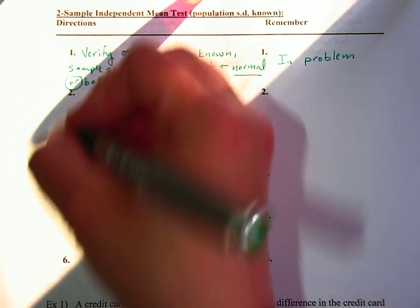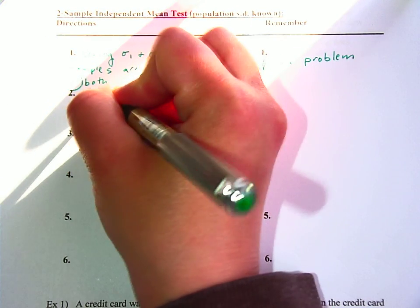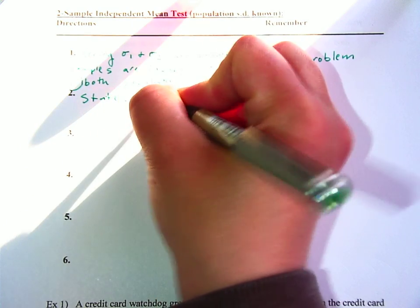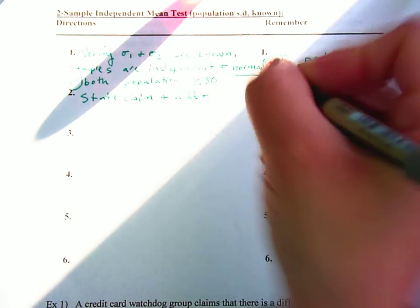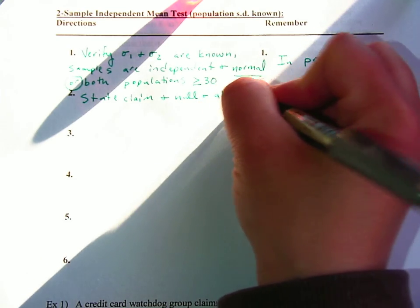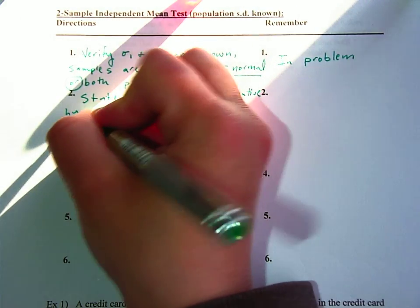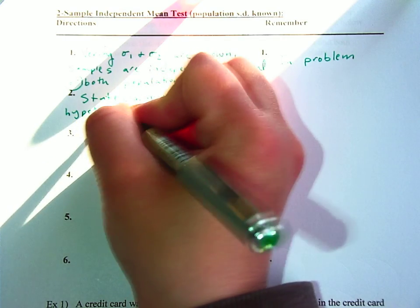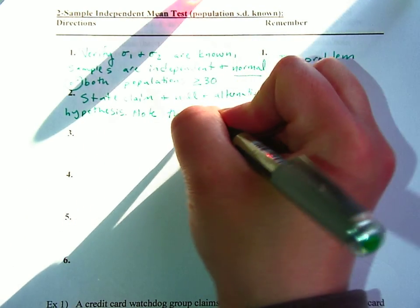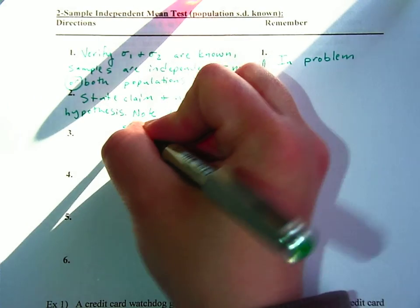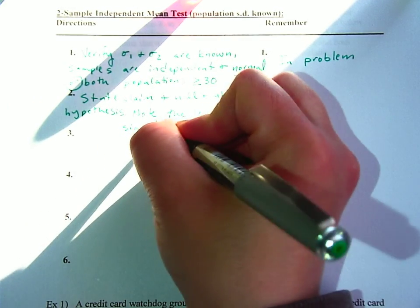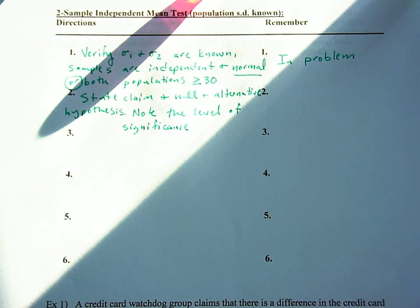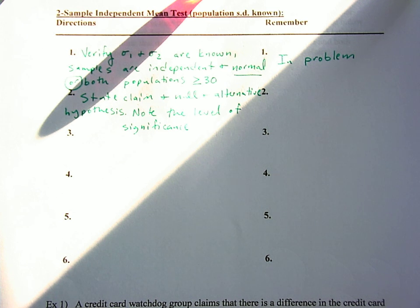Okay. Number two. You have to state the claim and null and alternative hypothesis. And note the level of significance. Which is alpha. So again, that says state the claim and null and alternative hypothesis. And note the level of significance.